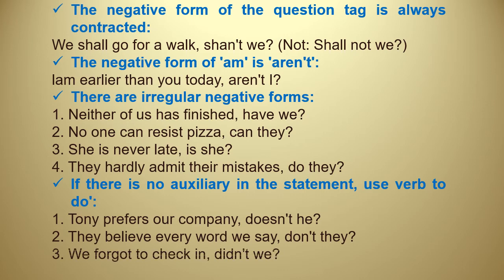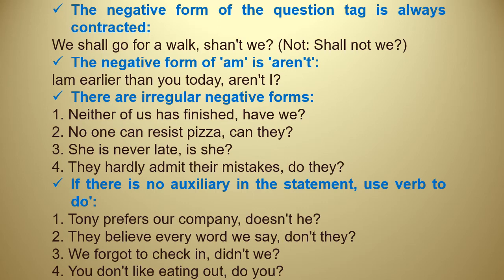The irregular cases of the question tag: Number one — 'Neither of us has finished, have we?' Here 'neither' plays the role of 'not.' Number two — 'No one can resist pizza, can they?' Here 'no one' plays the role of 'not.' Number three — 'She is never late, is she?' 'Never' plays the role of 'not.' Number four — 'They hardly admit their mistakes, do they?'